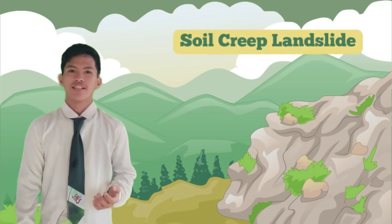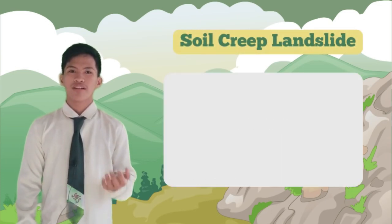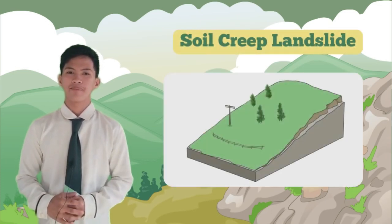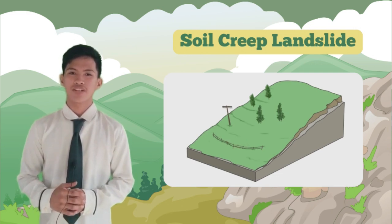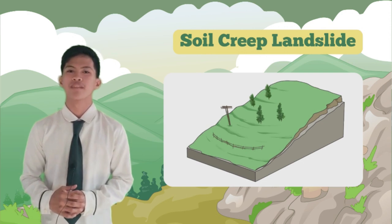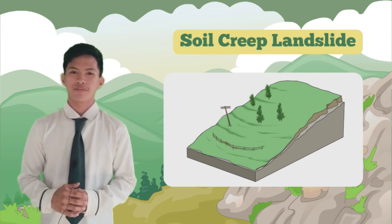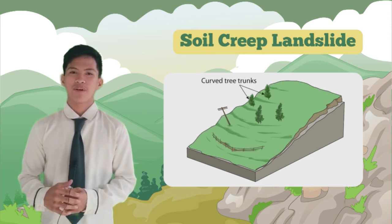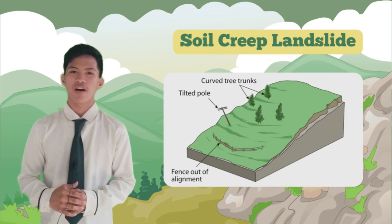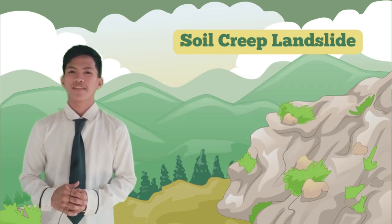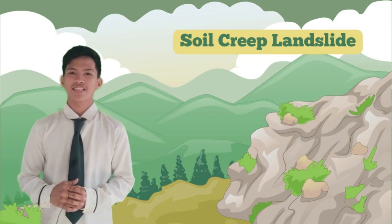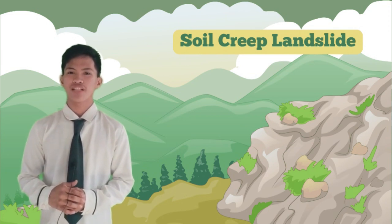Our first type of landslide is soil creep. Soil creep is a slow, gradual movement of soil and rock debris downhill. It occurs due to the force of gravity acting on unstable slopes, causing particles to move incrementally over time. Soil creep can be observed through tilted trees, cracked foundations, and fences, among other signs. While the movement is relatively slow, it can still pose a risk to infrastructure and property.